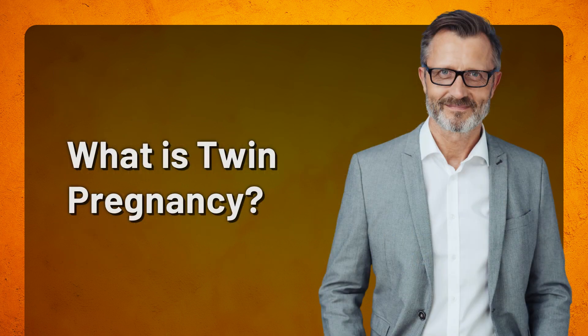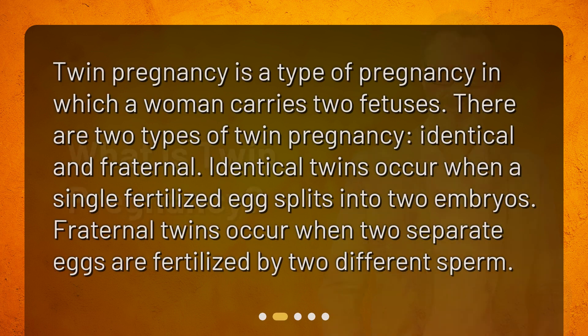What is twin pregnancy? Twin pregnancy is a type of pregnancy in which a woman carries two fetuses. There are two types of twin pregnancy: identical and fraternal. Identical twins occur when a single fertilized egg splits into two embryos. Fraternal twins occur when two separate eggs are fertilized by two different sperm.